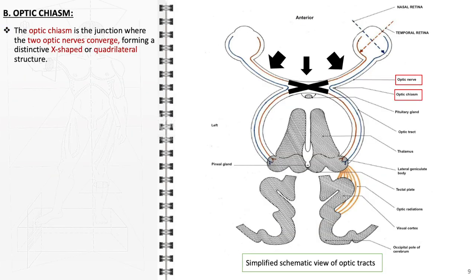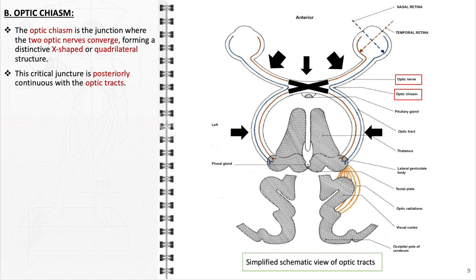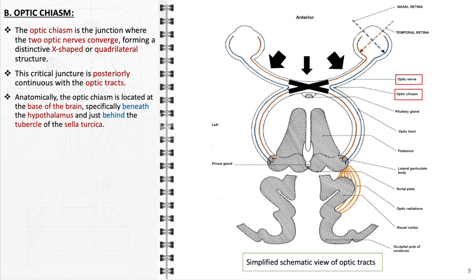The optic chiasm, situated at the junction where the two optic nerves converge, creates a characteristic X-shaped or quadrilateral structure that seamlessly connects with the optic tracts posteriorly. Located strategically at the base of the brain, the optic chiasm lies directly beneath the hypothalamus and posterior to the tubercle of the sella turcica, a bony structure of the sphenoid bone. This location positions the chiasm close to key brain areas involved in hormonal regulation and autonomic functions.